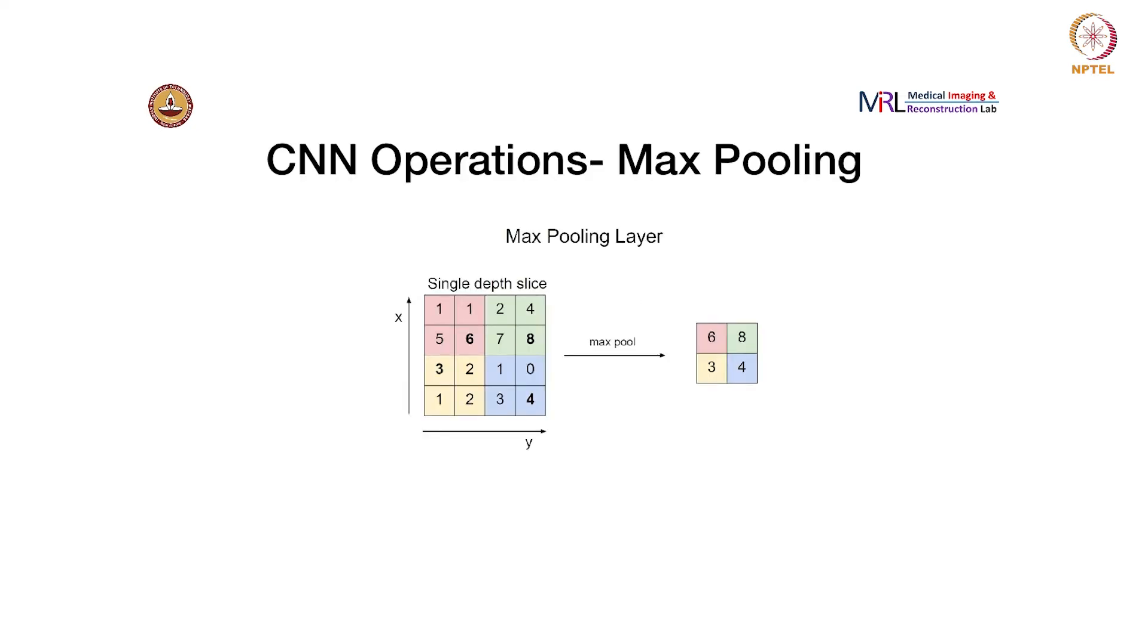If you have a feature map as shown here, and if you want to down sample it in order to get a slightly subsampled version of it, then you can do what is called max pooling, where you choose n cross n or k cross k regions of the input and choose the maximum value in there.